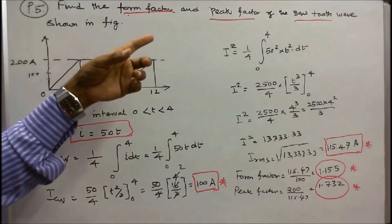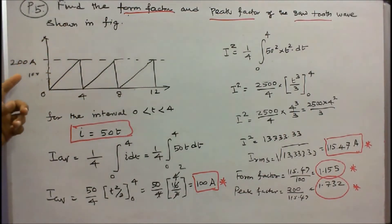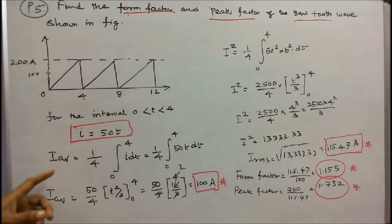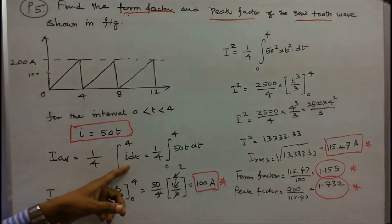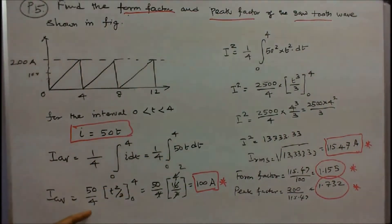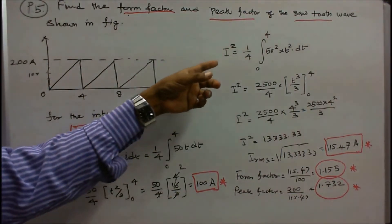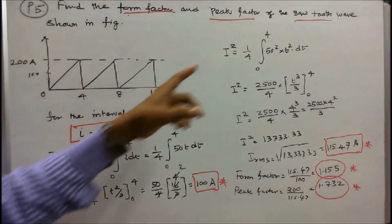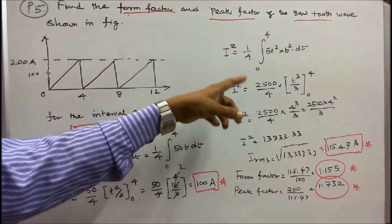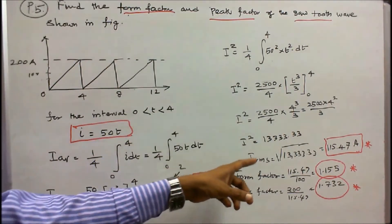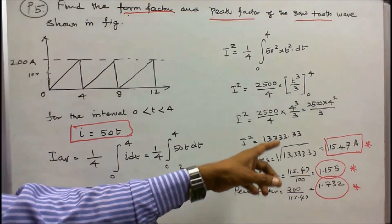Problem 5: find the form factor and peak factor of the sawtooth wave shown in the figure. Maximum current is 200 A. For the interval 0 to 4, instantaneous current I = 50t. I_average = (1/4) × integral from 0 to 4 of 50t dt = (50/4) × [t²/2] from 0 to 4 = 100 A. Mean square value = (1/4) × integral from 0 to 4 of (50t)² dt = (2500/4) × [t³/3] from 0 to 4 = 13,333.33. Therefore, I_rms = sqrt(13,333.33) = 115.47 A.